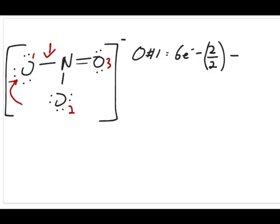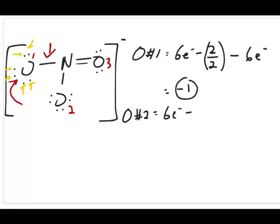Lastly, calculate the number of non-bonding electrons — count all the lone pair electrons, which is six for oxygen one. So: six minus one minus six equals negative one. The formal charge for oxygen number one is negative one. Oxygen number two has the same situation: six minus one minus six also equals negative one.